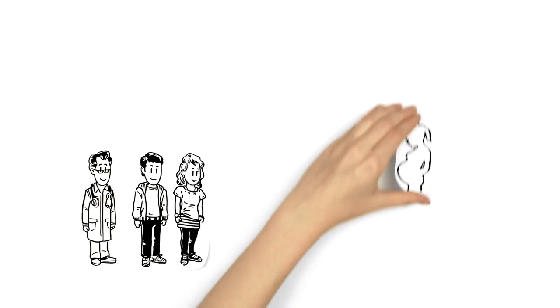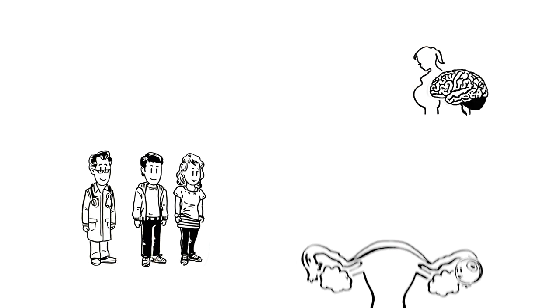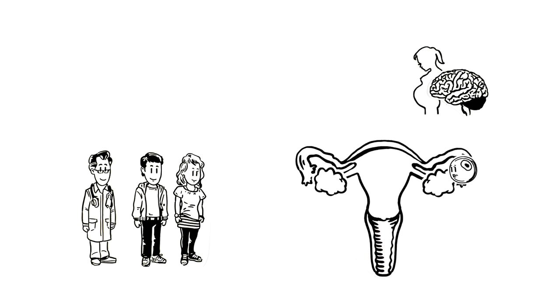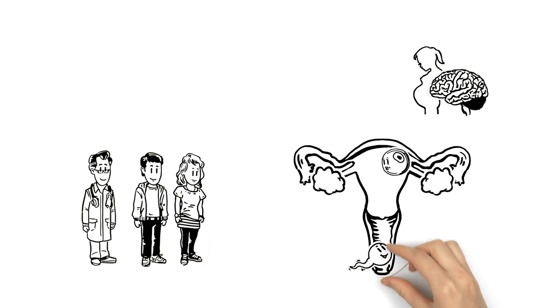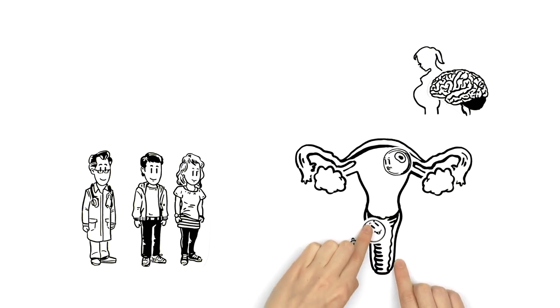In order for a woman to get pregnant, her body releases an egg cell from her ovaries. It moves into the womb, where it waits for a sperm cell to fertilize it.